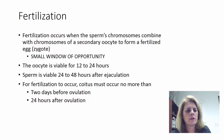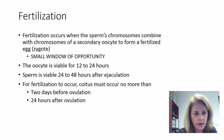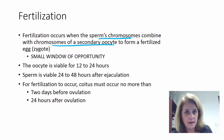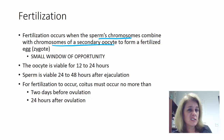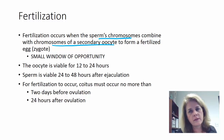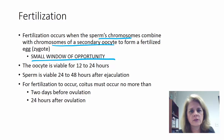Fertilization occurs when the sperm's chromosomes combine with the chromosomes of the secondary oocyte. Remember, that ovulated egg hasn't finished meiosis yet — it's in a suspended state and has to complete meiosis II before the process of oogenesis is done. There is a very small window of opportunity for fertilization to actually occur.